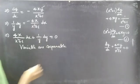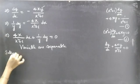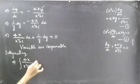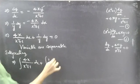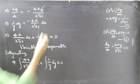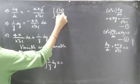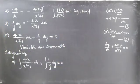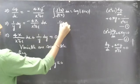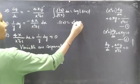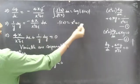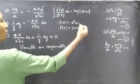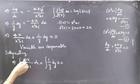Since the variables are separable, we can perform integration: ∫ 4x/(x² + 1) dx + ∫ (1/y) dy = 0. We know that ∫ f'(x)/f(x) dx = log|f(x)|. If f(x) = x² + 1, then f'(x) = 2x. So we can write 4x as 2 × 2x in order to apply this formula.